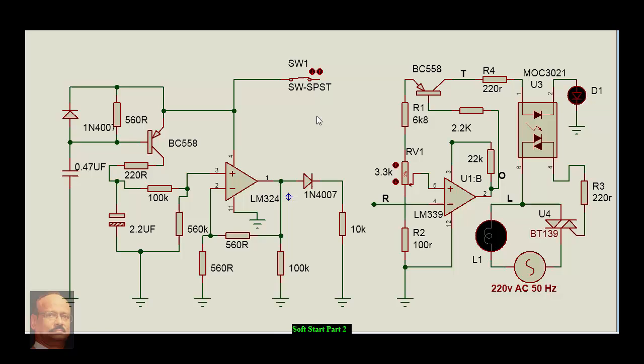Once the power supply is given, we connect it to the appropriate place. When power is applied, this IC, the LM324, gets power. There's a transistor here, and once we apply power, current flows through the base emitter circuit and charges this capacitor.